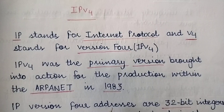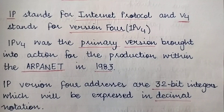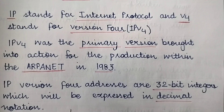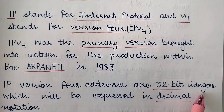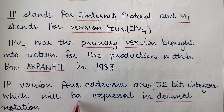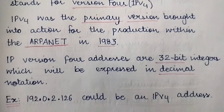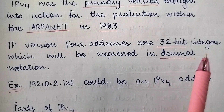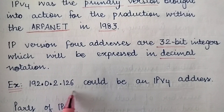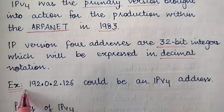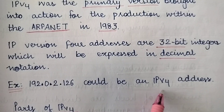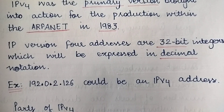IP version 4 addresses are basically 32-bit integers. The addressing scheme used in IP version 4 expresses these 32-bit integers in decimal notation, and this is an example of what an IP version 4 address looks like.